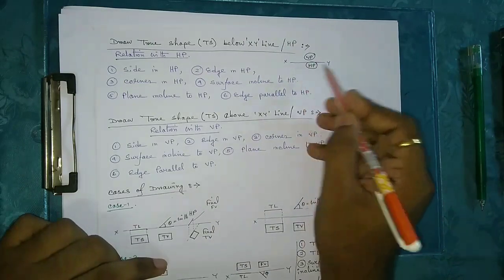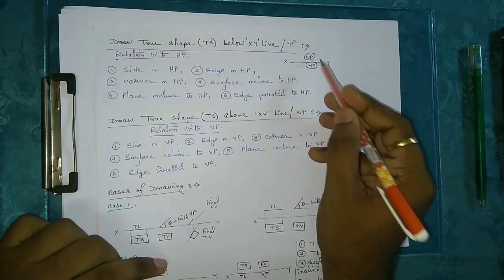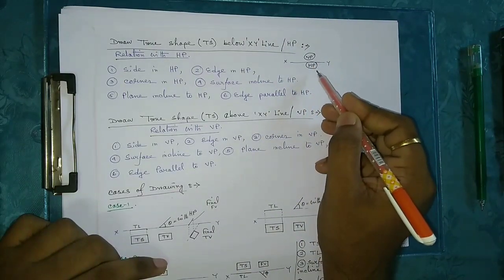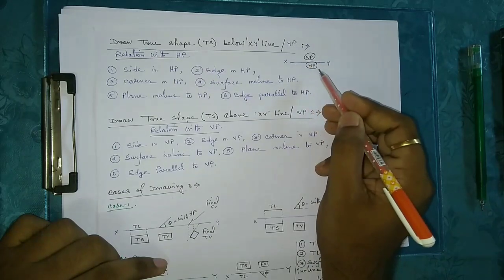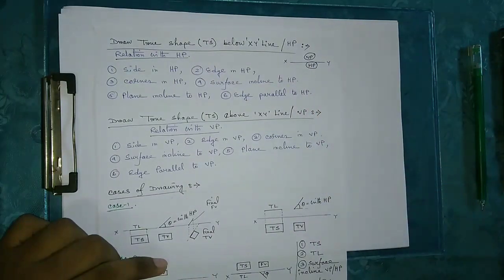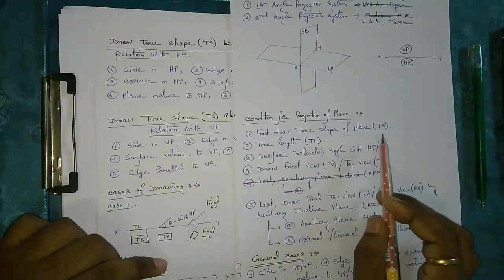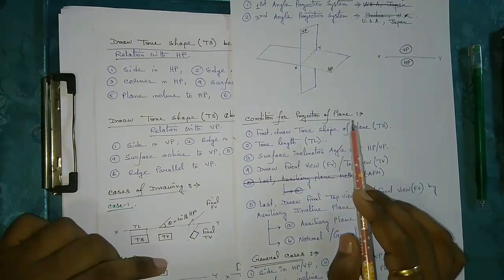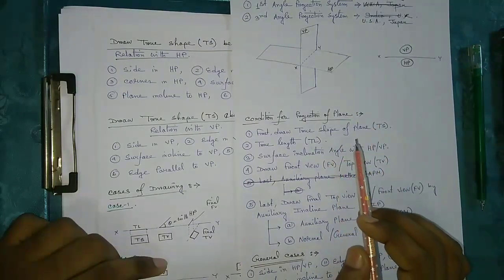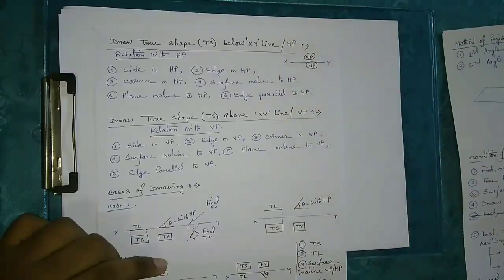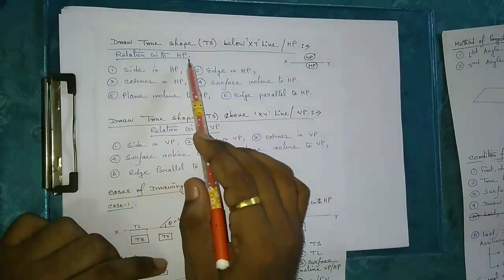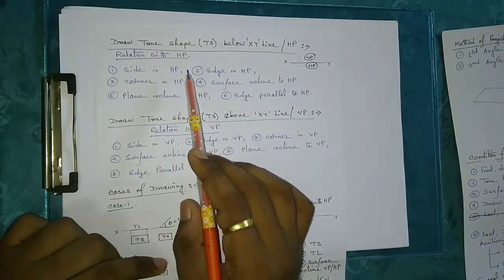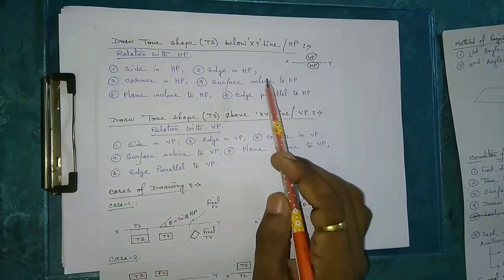We know that above the XY line is the vertical plane, and below the XY line is the horizontal plane. Now we have to draw the true shape first. Where do we draw the true shape — in HP or VP? If you have a condition with HP, you draw the true shape below the XY line.